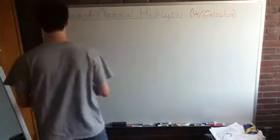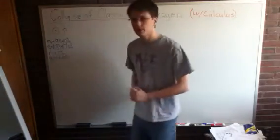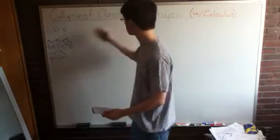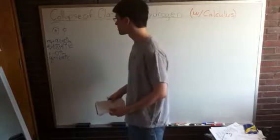I'm going to get started. I've drawn here the model that we are going to be using of the classical atom, which is just a proton and an electron orbiting around it. It's hydrogen, so very straightforward.